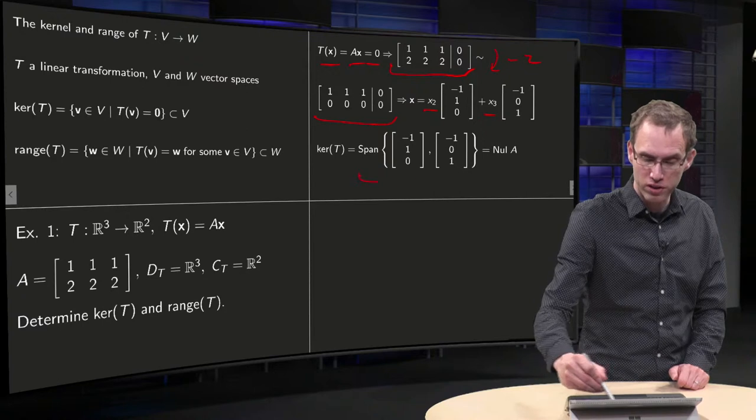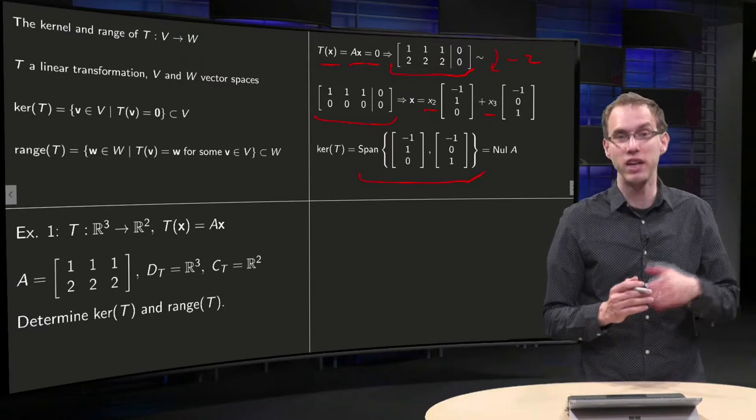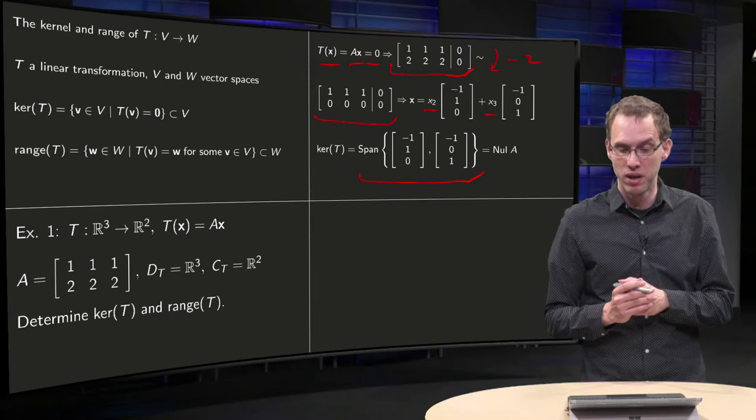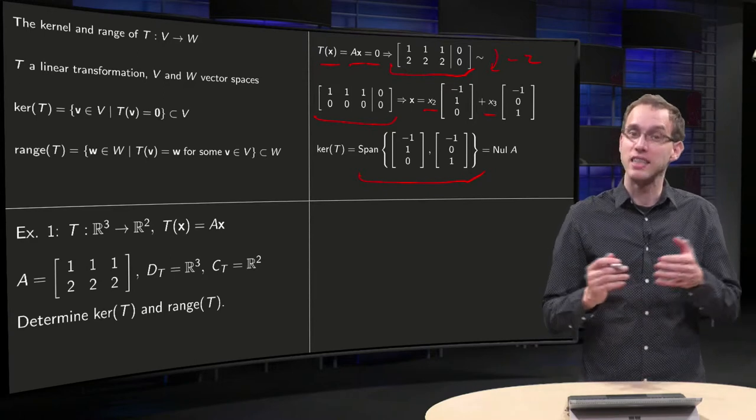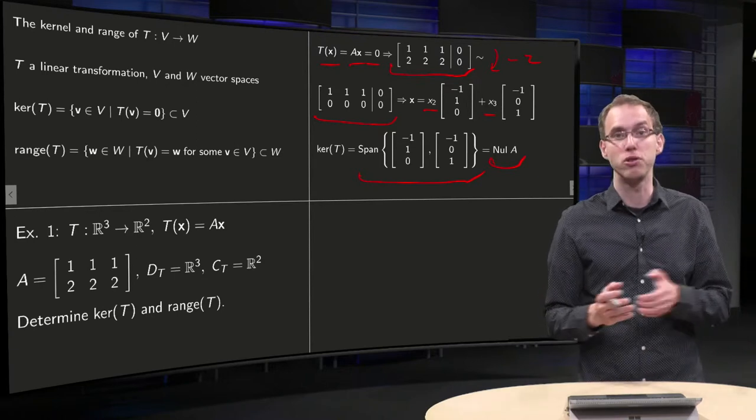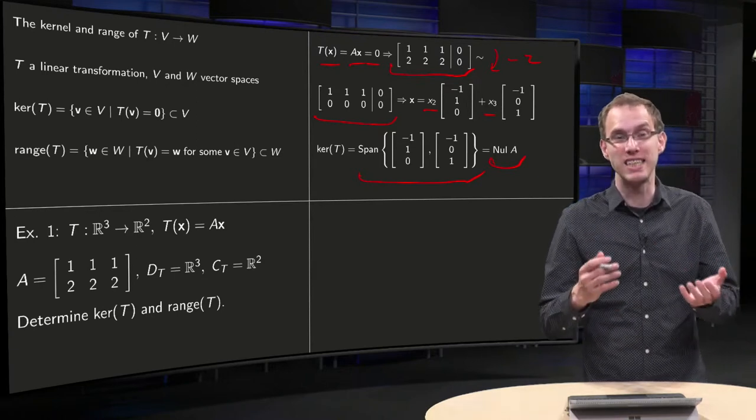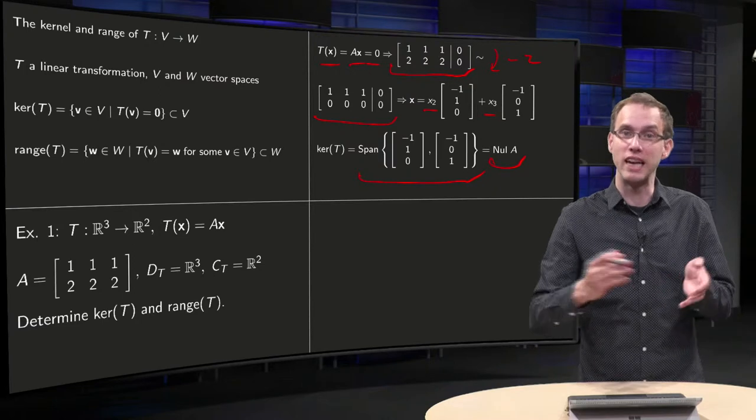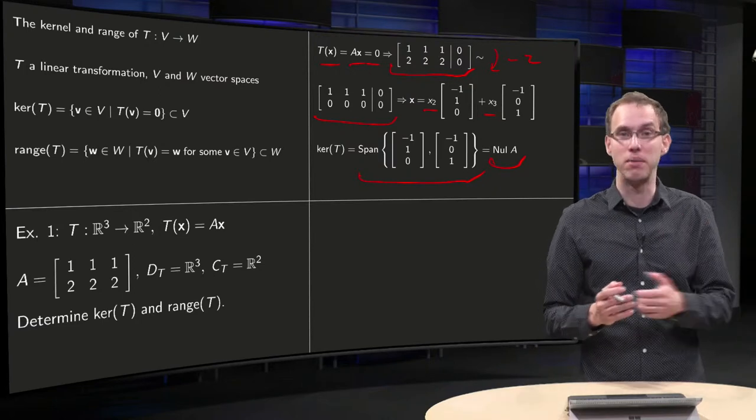So the kernel of T is the set of all linear combinations of (-1, 1, 0) and (-1, 0, 1), and that is in fact the same as the null space of the matrix A. It always holds, of course, because the null space of the matrix A is exactly the set of vectors such that A times X equals zero, and it is the same as the kernel.